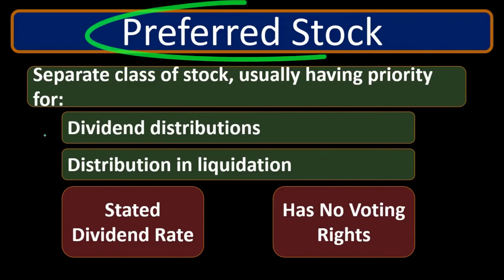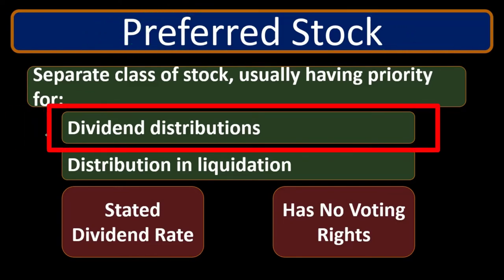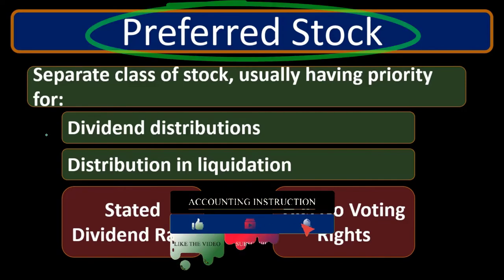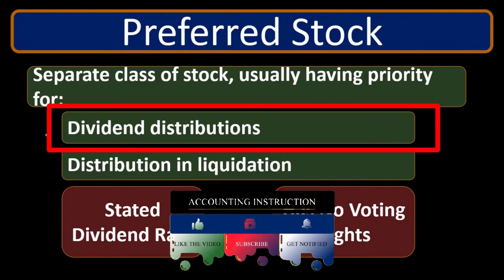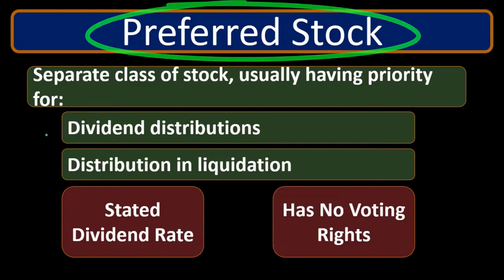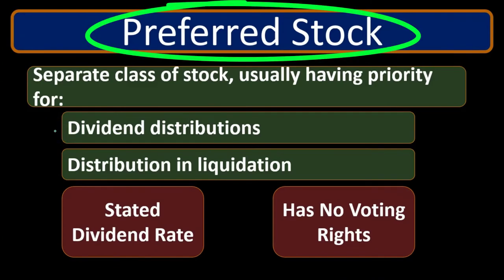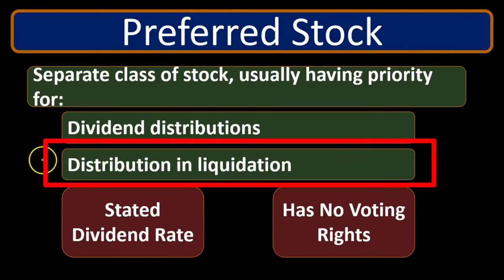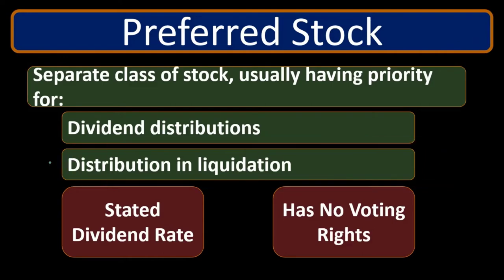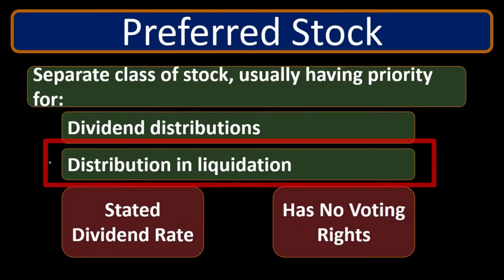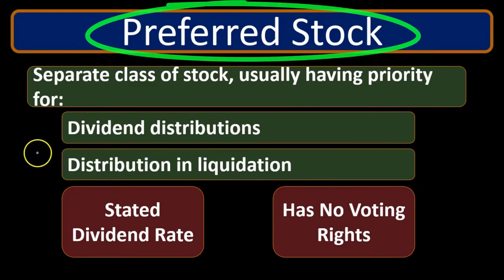Why is preferred stock called preferred? Because preferred stockholders get priority — it's more like hedging your bets in case something goes wrong. When there's a dividend distribution, preferred stockholders get paid first, but only up to a certain amount. If the dividend declared is very high, common stockholders may benefit more. However, if the dividend declared is fairly low, preferred stockholders get paid first and common stockholders may get nothing. Similarly, if the company liquidates, preferred stockholders get paid before common stockholders.